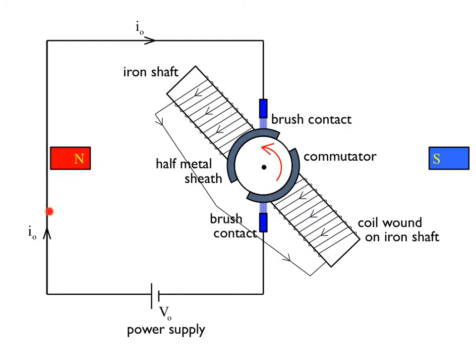So current goes from the high voltage side of the battery, through the sliding contact, through the coil, over, through the coil, back to the sheath, back to the sliding contact, to ground. Makes a complete circuit.